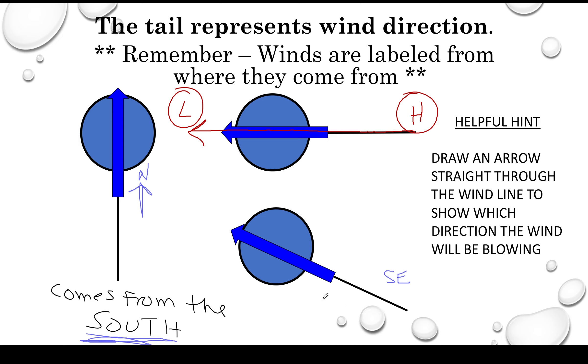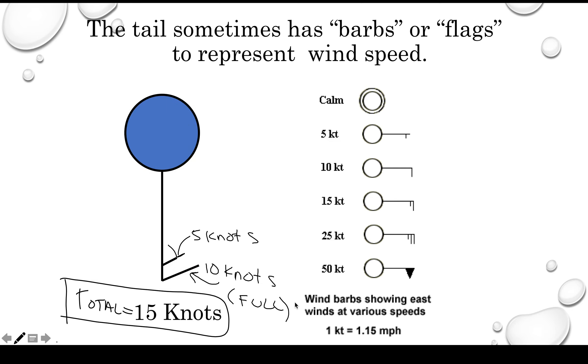Example down here: we would call this wind a southeast wind, but it is blowing towards the northwest. Now for knots, a small feather is 5 knots and a full feather is 10 knots. Now one key here is if you have a full feather it will be 10 knots; you won't see two half feathers to represent 10 knots.